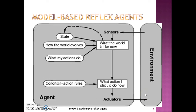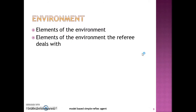For the given problem of the referee, let us see what would be the contents of each block. Starting with the environment: elements of the environment could be the stadium, the judges, the viewers, the field, the teams, etc. But from the problem definition, the referee should deal with only the playing field, the teams, the scoreboard, and the TV umpire. These are the elements of the environment applicable for this referee as an agent.